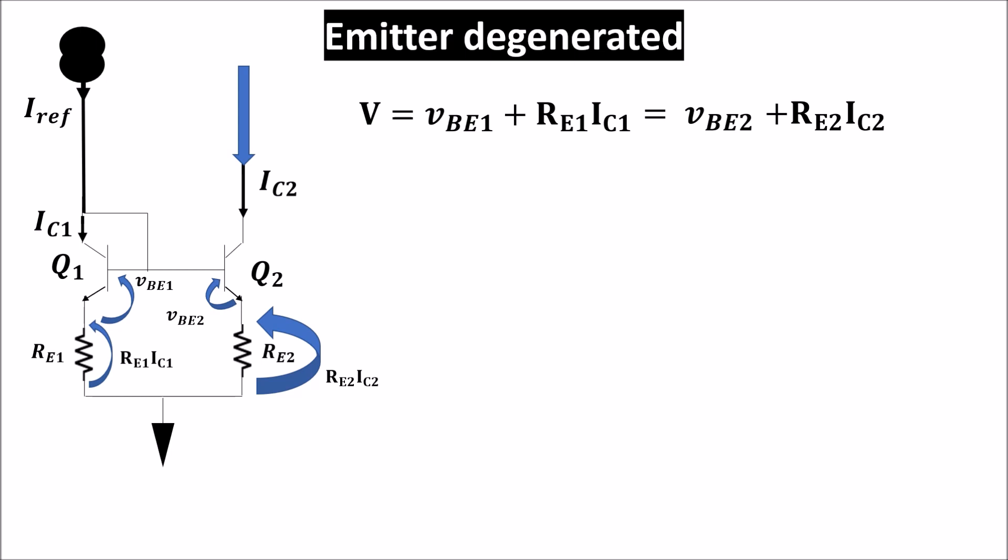Now let's see the current transfer ratio. The Kirchhoff voltage law on the base emitter loop can be written also in this way, and finally in this. If we keep the voltage drops on R_E2 much more than the thermal voltage, let's say one volt drop against 26 millivolts of the thermal voltage, we can consider the right term as zero.